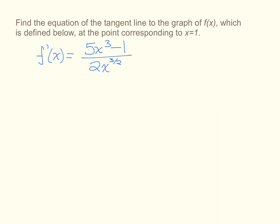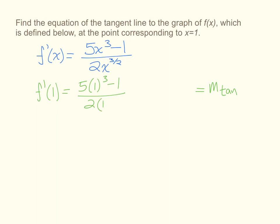We are asked to find the equation of the tangent line at the point corresponding to x equals 1. If we find f prime of 1, that will give us the slope of the tangent line. Substituting 1 in for x into our derivative, we get 5 minus 1 over 2, which is 4 over 2, which equals 2. The slope of our tangent line is 2.